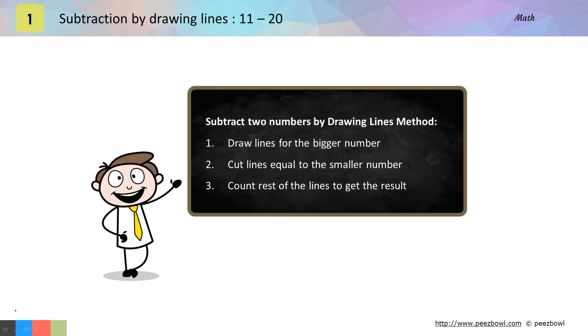In drawing lines method, first we need to identify the bigger number and draw lines equal to the bigger number. For the second step, we need to cut lines equal to the smaller number from the lines we have already drawn. Then count the rest of the lines to get the result.